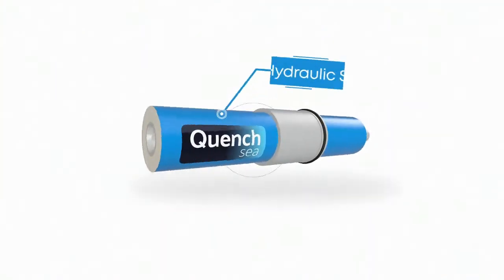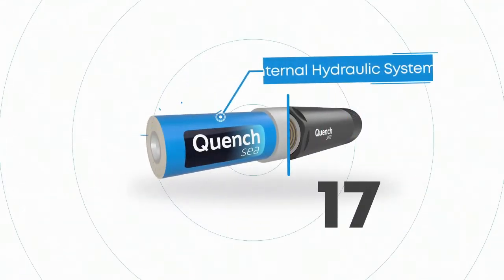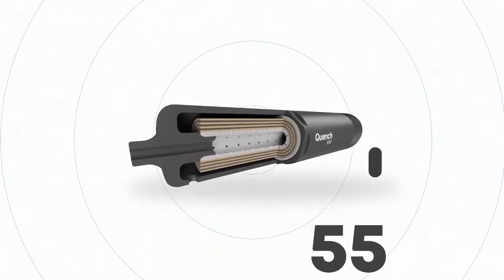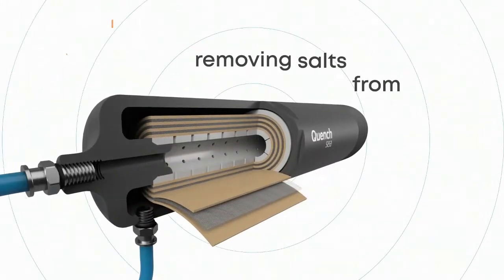Its internal hydraulic system builds pressure to the required 55 bars for the reverse osmosis process to begin, removing salts from water.